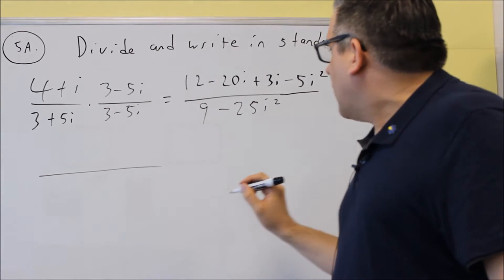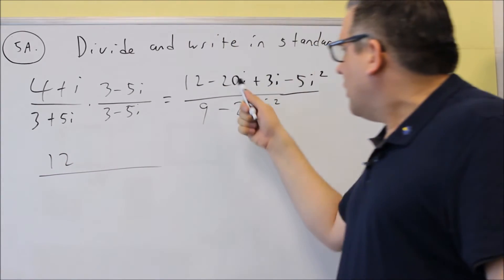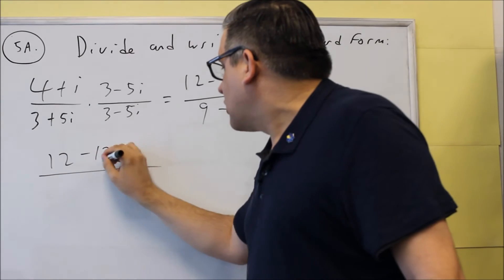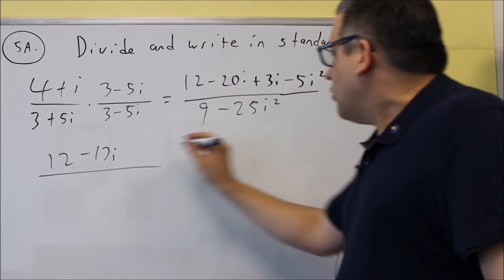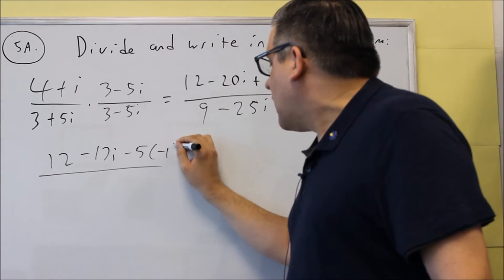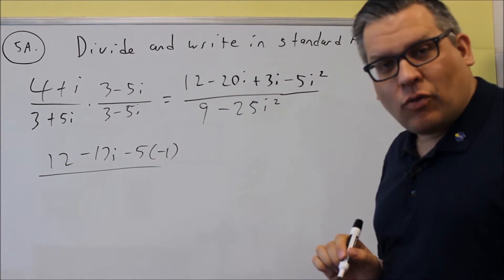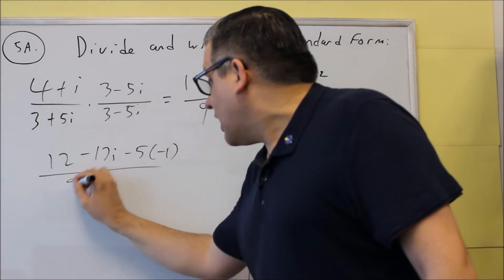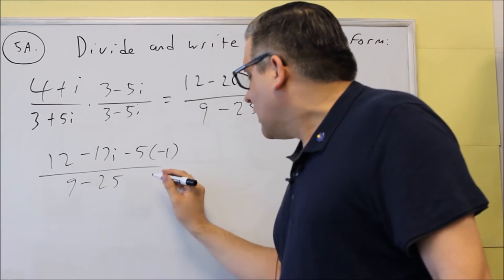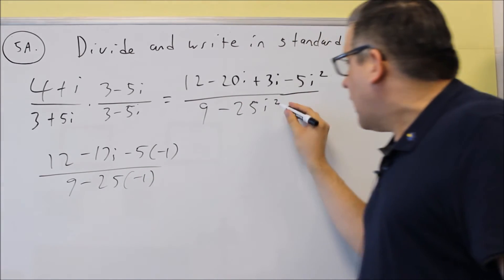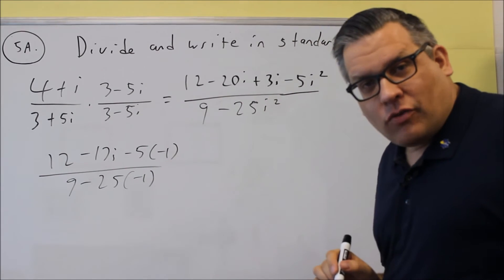So when I do that, I get 12, negative 20 plus 3 is going to give you negative 17i, and then you get negative 5 times i squared, which we said is supposed to be negative 1. On the bottom, we have 9 minus 25. Also there's a negative i squared down there, that's going to turn into a negative 1.